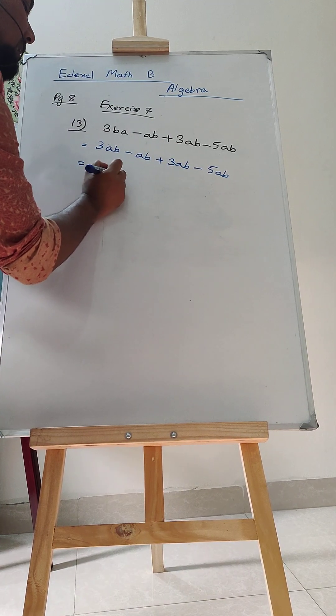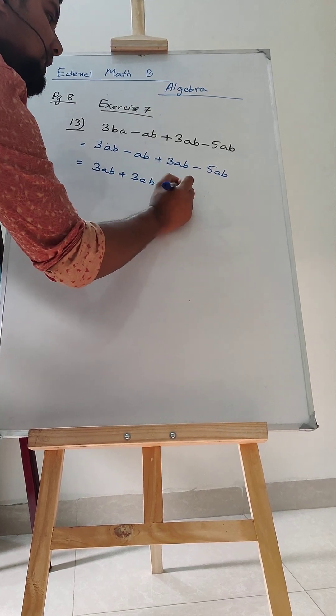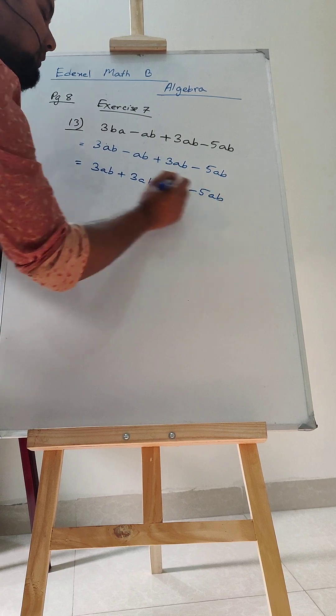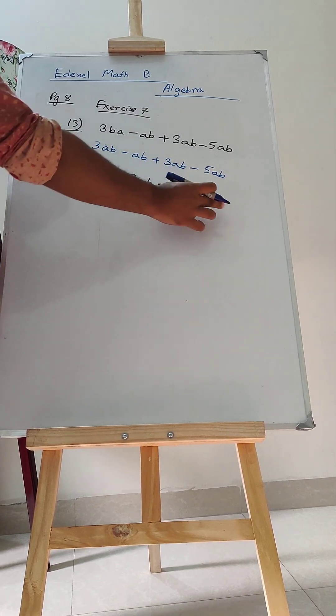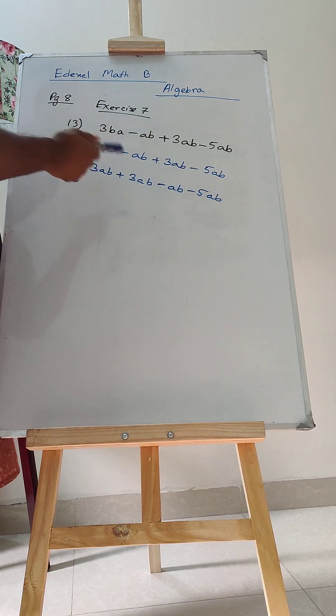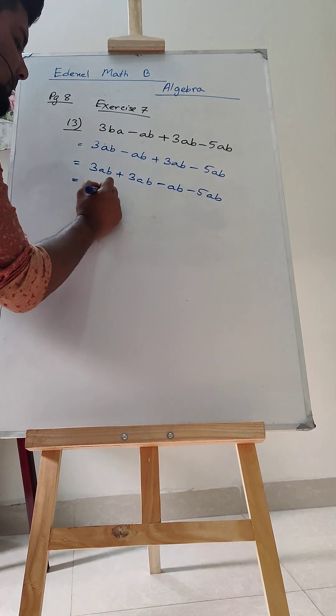Let's say 3AB plus 3AB minus AB minus 5AB. Ultimately, this is 3 plus 3. Both are same. All the terms have got same, similar sets of variables. 3 plus 3 will be 6AB.